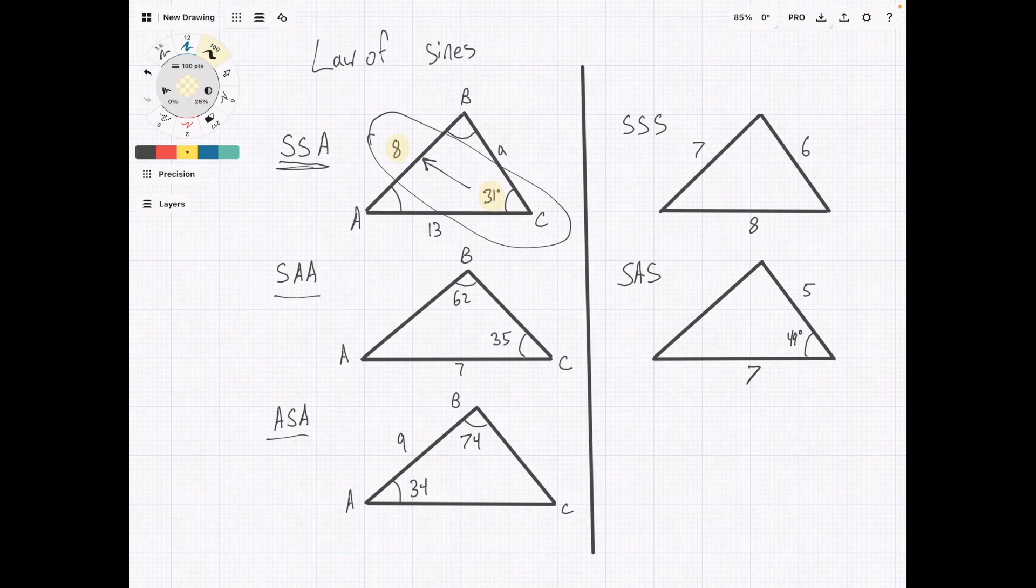Now we can use that rule of thumb and work our way down. For a side angle angle problem, we have this one, we have angle B and side B. So again, this is law of sines. And you can just circle that pair.